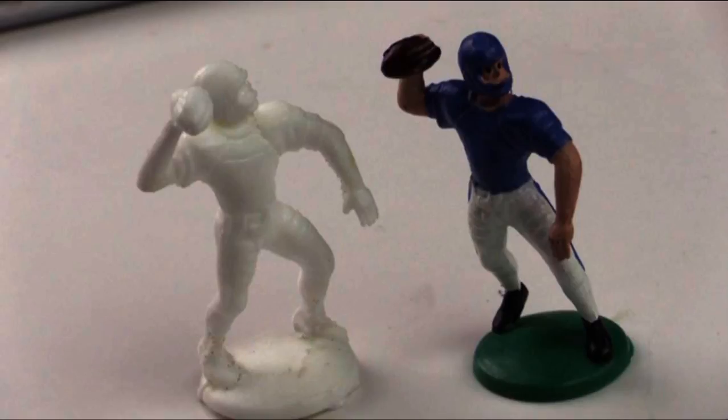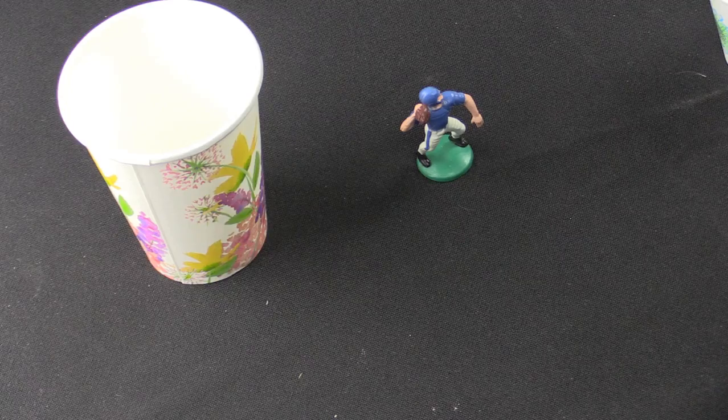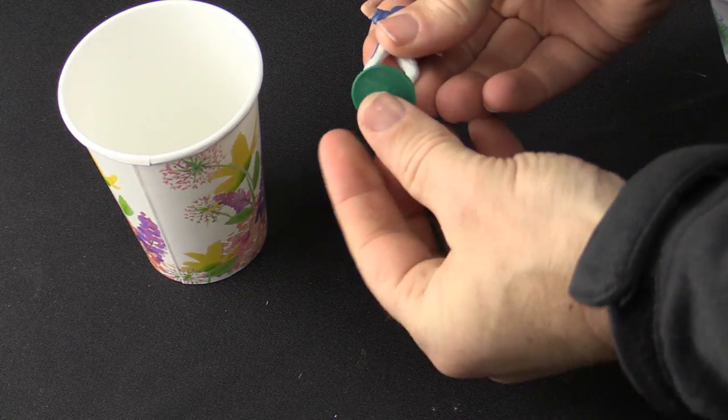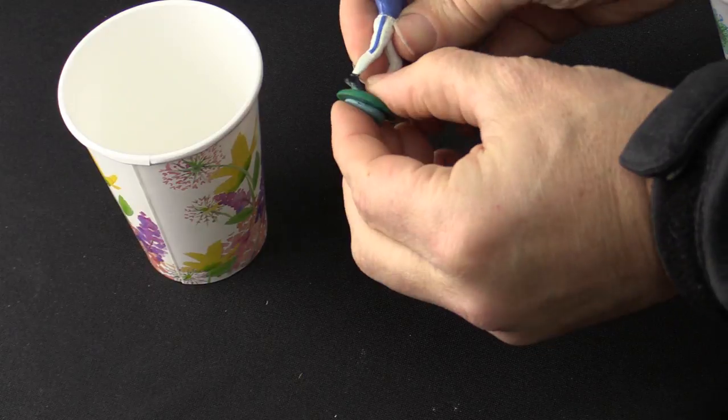This video provides instructions for duplicating a basic figurine using a cup block mold method. Start with a touch of polymer clay, a figurine like this football player, and a cup.